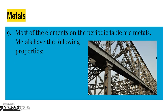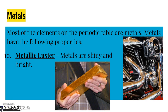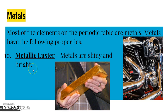Number nine: most of the elements on the periodic table are metals. Metals have the following properties. I put this picture here because this bridge is obviously made out of metal. Number ten: metals have metallic luster, meaning the metals are usually shiny and bright — like this gold bar, like this motorcycle engine. See how these are shiny and bright? Those are metals because they have metallic luster.